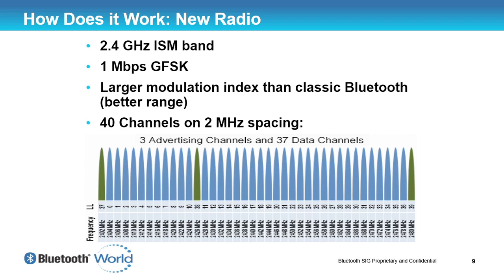We have three advertising channels strategically placed around the band — one at the bottom end, one at the top end, and one in the middle. That middle one is strategically placed between Wi-Fi channel 1 and Wi-Fi channel 6, because infrastructure networks on a corporate campus typically use Wi-Fi access points on channels 1, 6, and 11. So we've strategically placed the advertising channels such that Wi-Fi doesn't interfere with Bluetooth Low Energy advertising, and BLE advertising doesn't interfere with Wi-Fi.